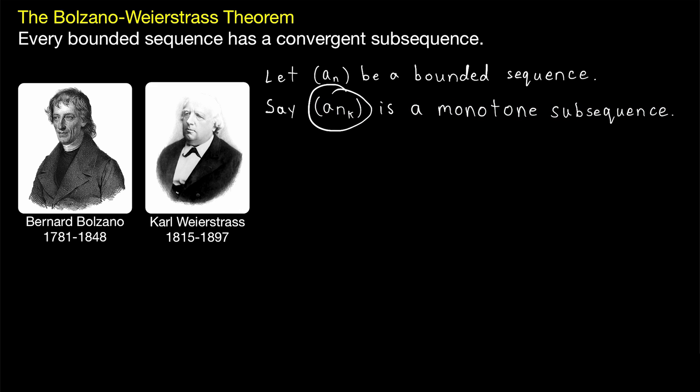Now, if A_N_K is bounded, then we know it converges by the monotone convergence theorem. So is it bounded? Well, of course it is. Every term of a subsequence is coming from the original sequence, and our original sequence is bounded. So all of the terms of A_N are bounded. The terms of A_N include the terms of its subsequence A_N_K. So A_N_K is definitely bounded.